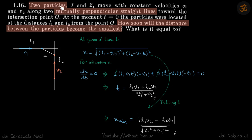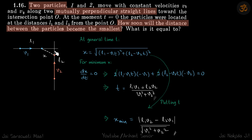We are given two particles traveling in mutually perpendicular directions with velocities v1 and v2, and their initial distances from the point of intersection are l1 and l2. So we are given v1, v2, l1, l2, and the angle between their paths is 90 degrees.